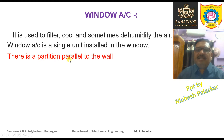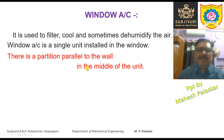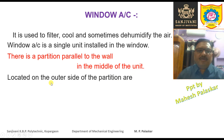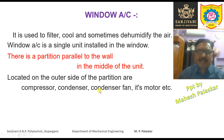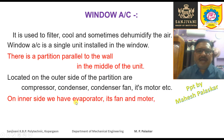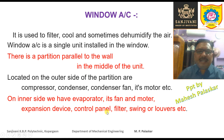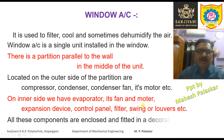A Window Air Conditioner is a single unit installed in the window. There is a partition in this unit, parallel to the wall in which it is installed. Located on the outer side of the partition are the compressor, condenser, condenser fan, and condenser motor. On the inner side we have the evaporator, evaporator fan, evaporator motor, expansion device, control panel, air filter, and the swing or louvers to change the direction of the cold air coming out.